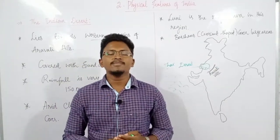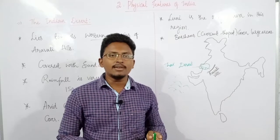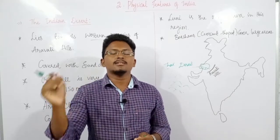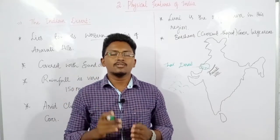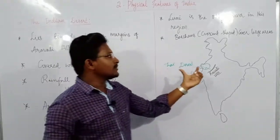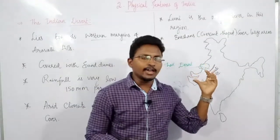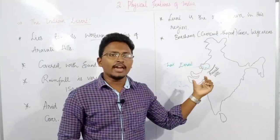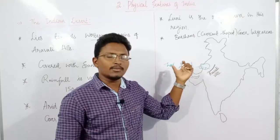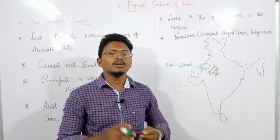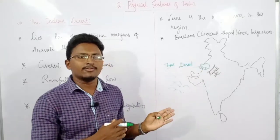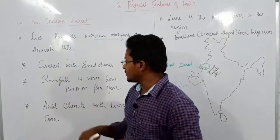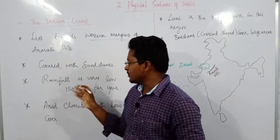The rainfall is just 150 millimeters per year — that means it is not even significant in centimeters. The temperatures are very high and cloud formation is very low because of which there is less rainfall. Therefore it receives just 150 millimeters per year.